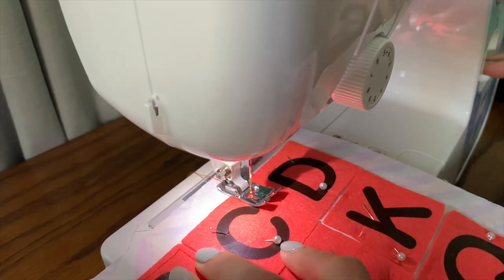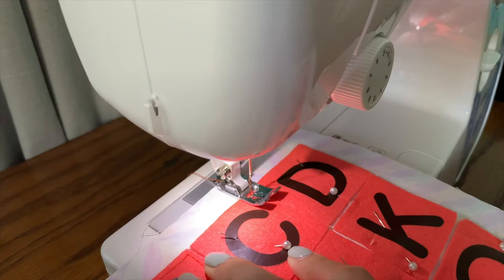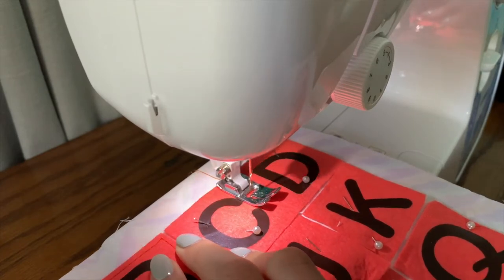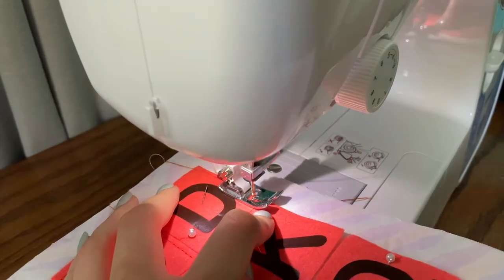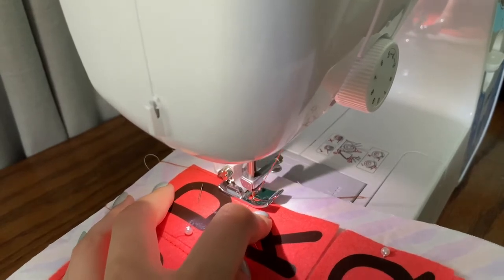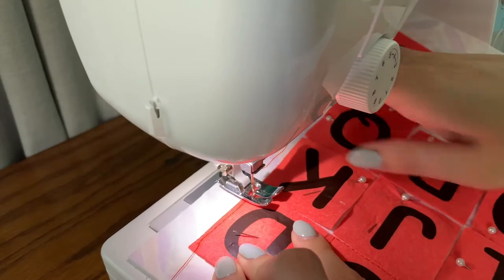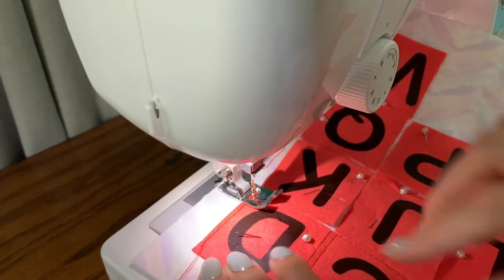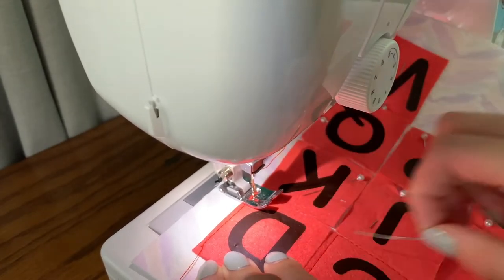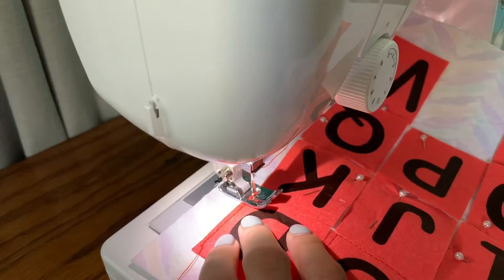Do a back stitch or do two or three back stitches to secure the thread into place. When turning the corner on the square to make the corner sharp, make sure to leave the needle inserted into the fabric. Lift the presser foot and then turn the fabric. Put the presser foot down and then continue.